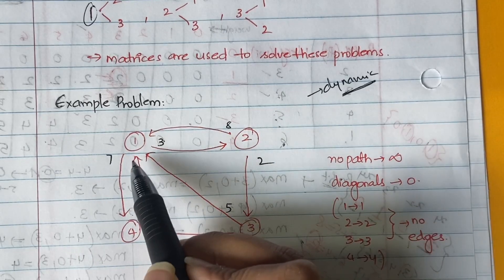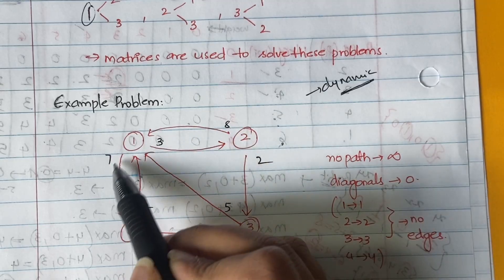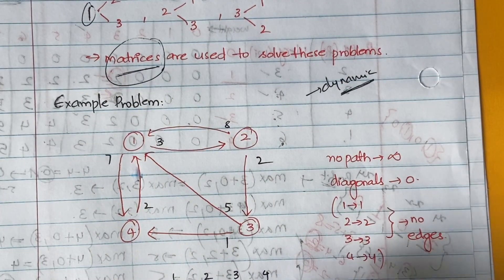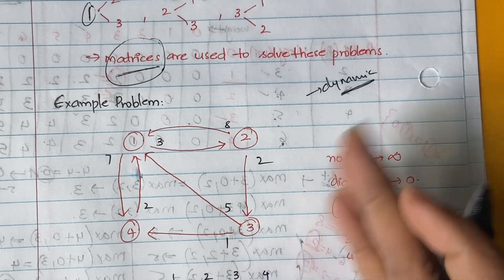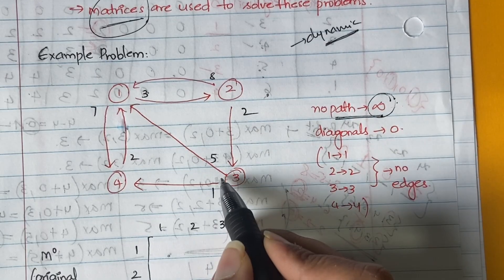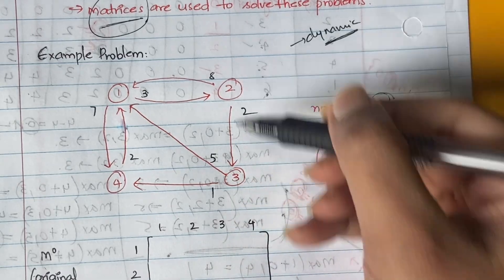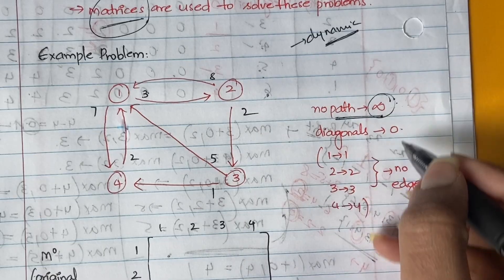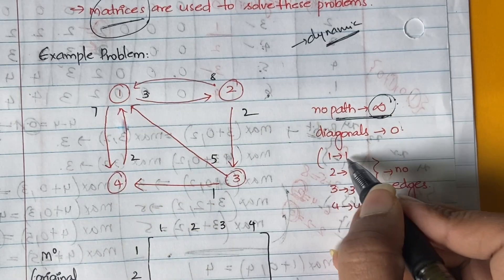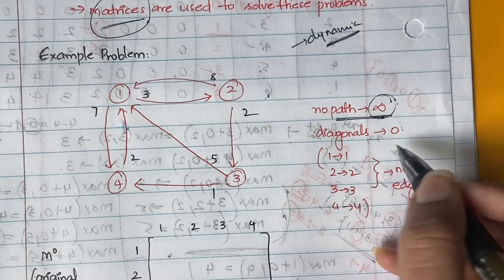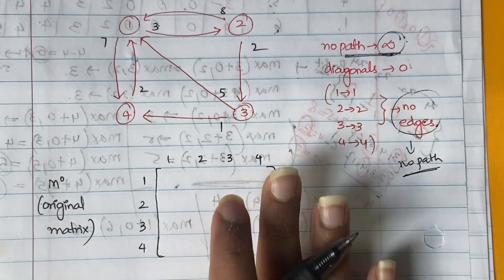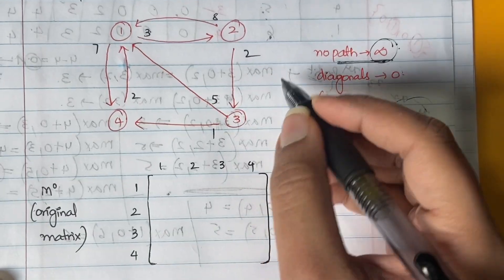There are edges and the small numbers on top of the edges are the weights associated with them. We will be constructing a matrix at every iteration. In that matrix, whenever there is no path it should be given as infinity — for example, from 3 to 2 there is no path, so that will be infinity. All diagonal elements will be taken as zero, because from a vertex to itself there are no edges and hence no path.